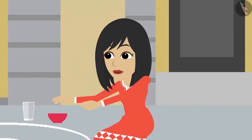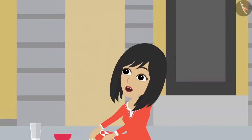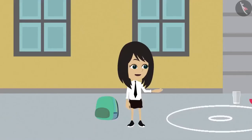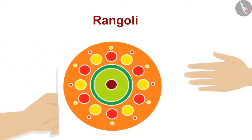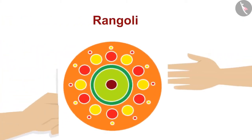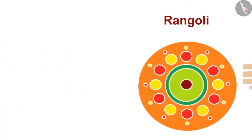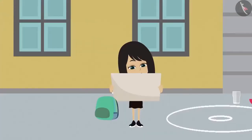Good, you have come. Come and help me make the rangoli. Till then, I will get your food ready. How can I help? I do not know how to make a rangoli. I will make the rangoli. You just copy the design from this paper onto the ground with this chalk. There are many circles made in it.